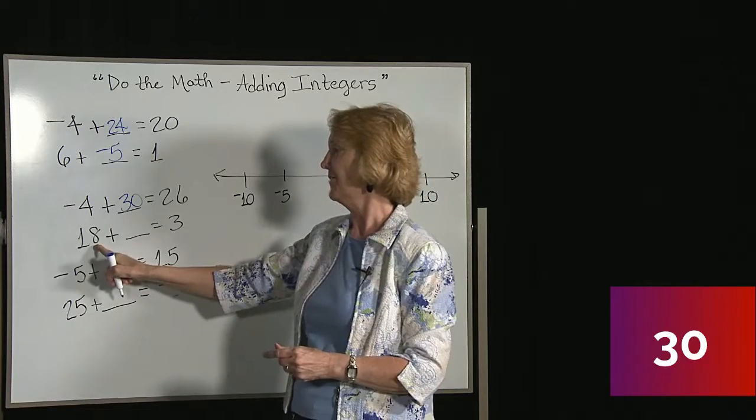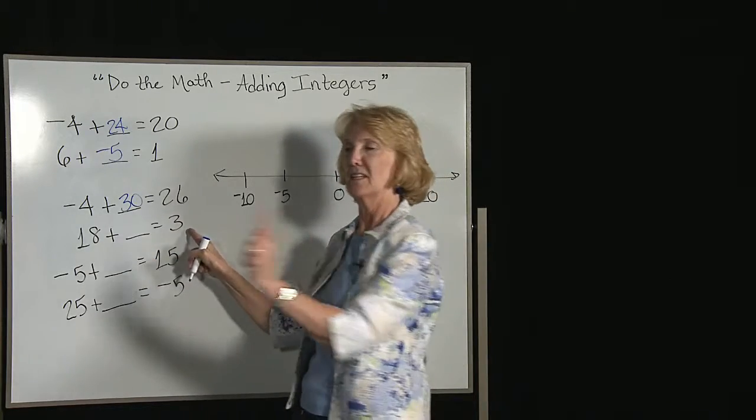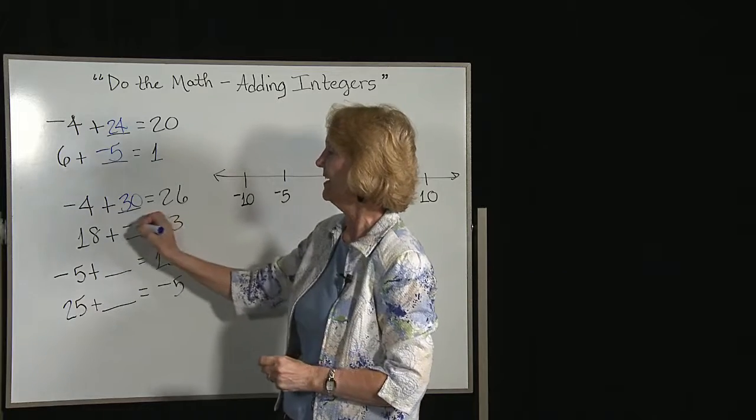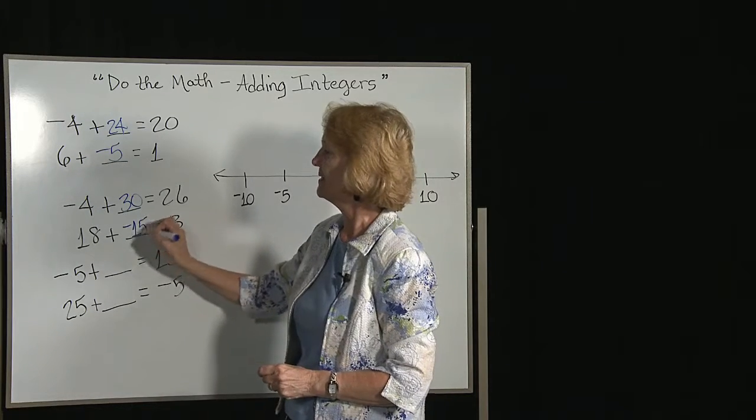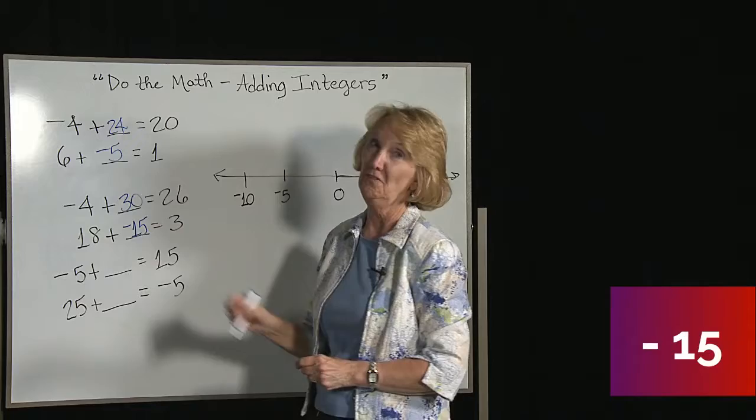On this one, if we have 18 and we end up at 3, which means we must have added a negative number. The distance between 18 and 3 is 15.